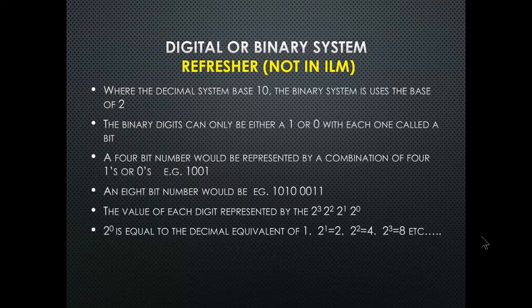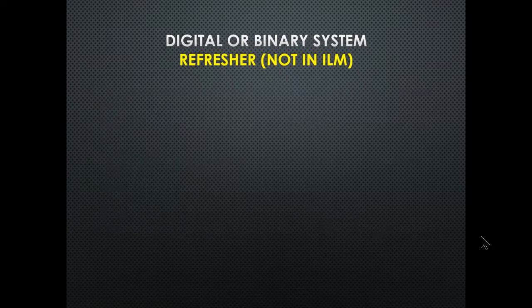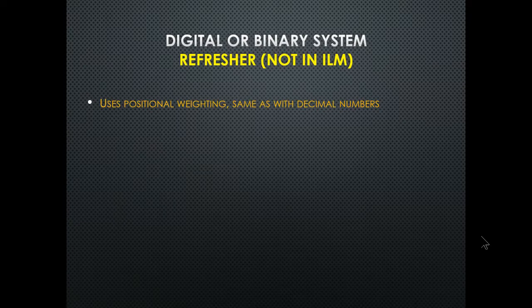2⁰ equals 1, 2¹ equals 2, 2² equals 4, 2³ equals 8, and so on. This uses positional weighting, same as decimal numbers. For example, the decimal number 205 is 2×10² + 0×10¹ + 5×10⁰.